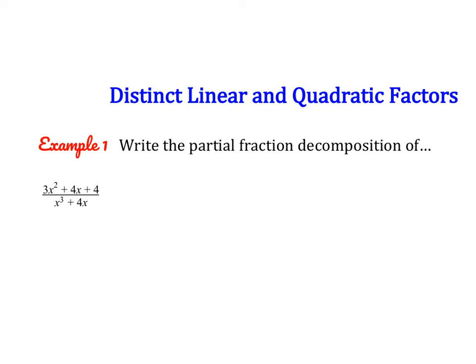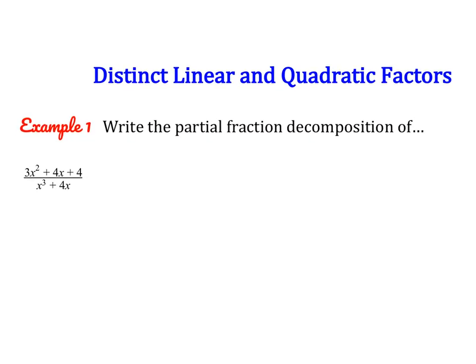Let's have a look at this problem. You can see that our fraction is not improper, so we can continue on to step two. When I factor this denominator, you can see that we end up with x times x squared plus 4. We can no longer factor anything — it's completely factored — and here we have a quadratic factor.